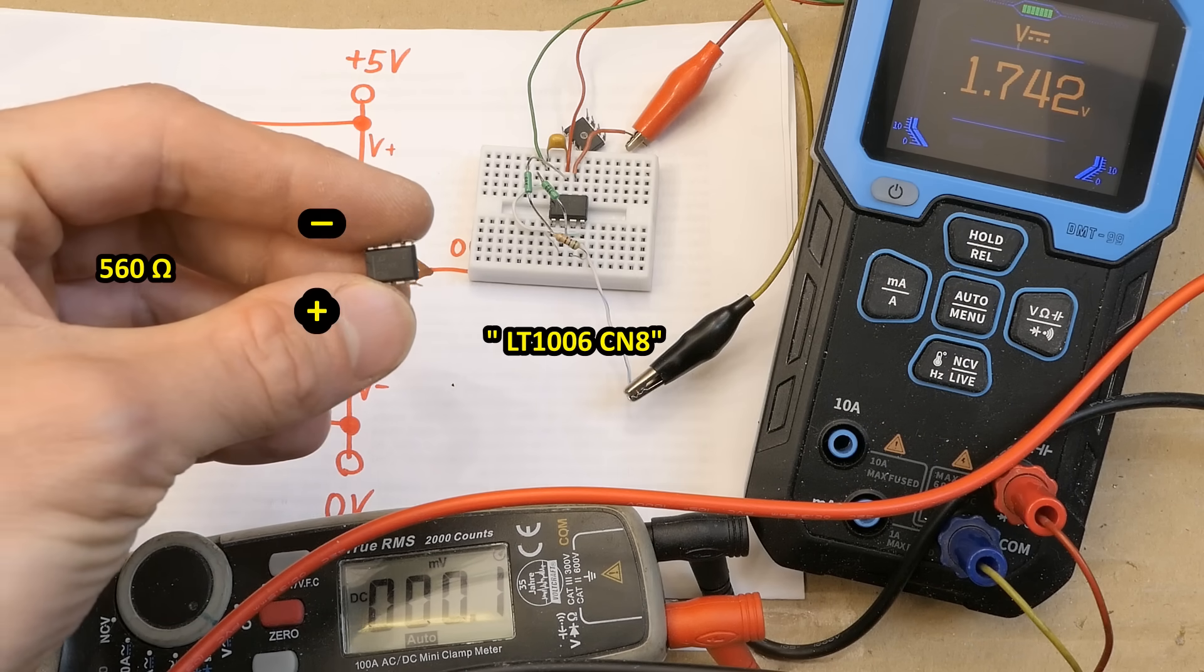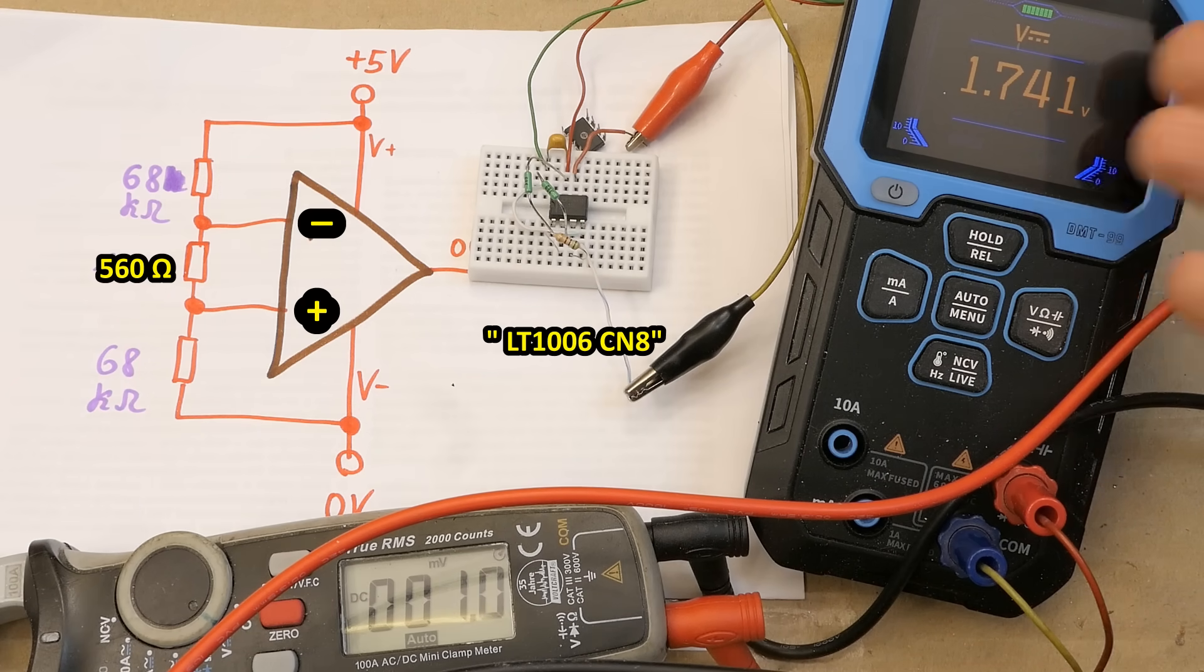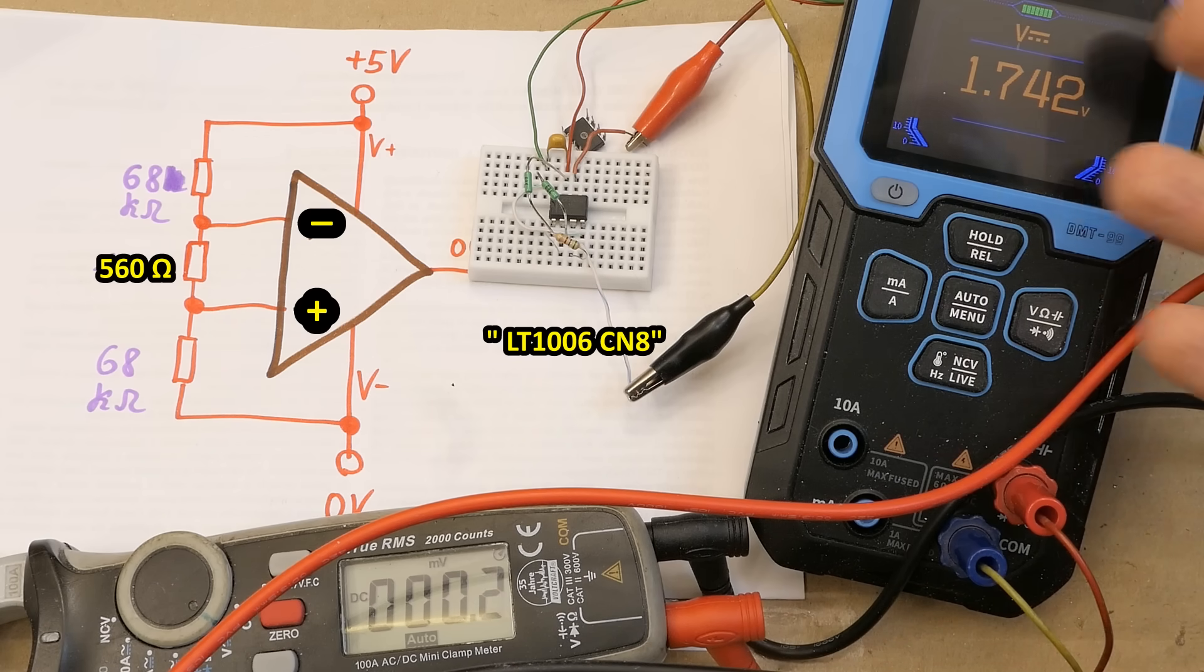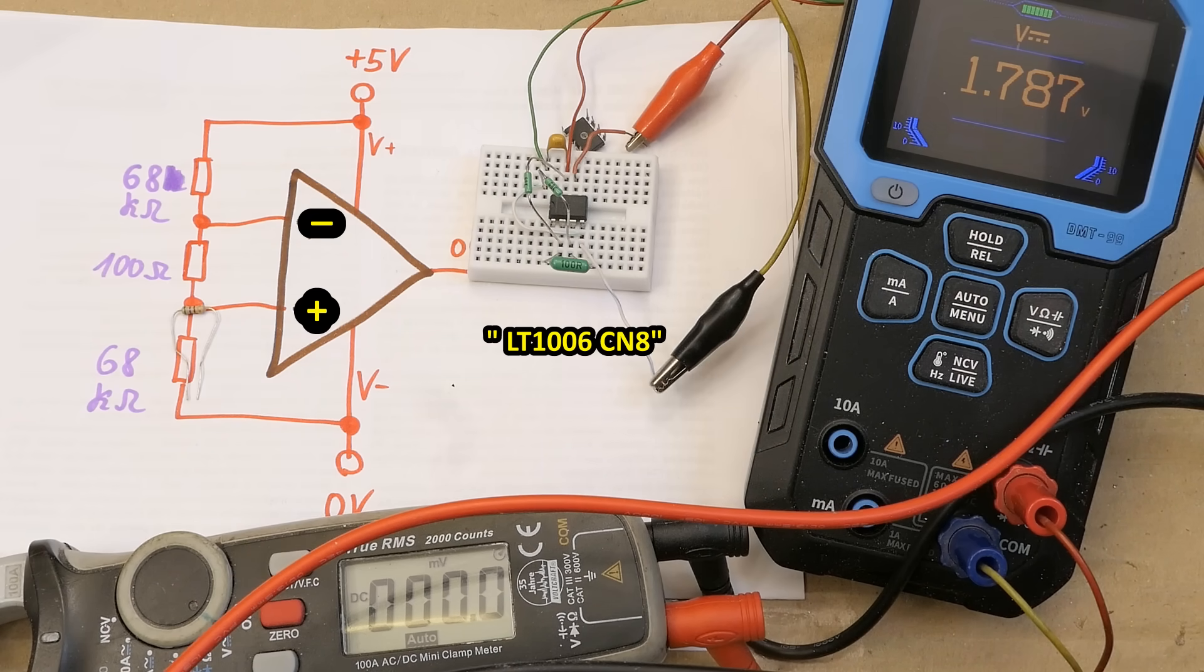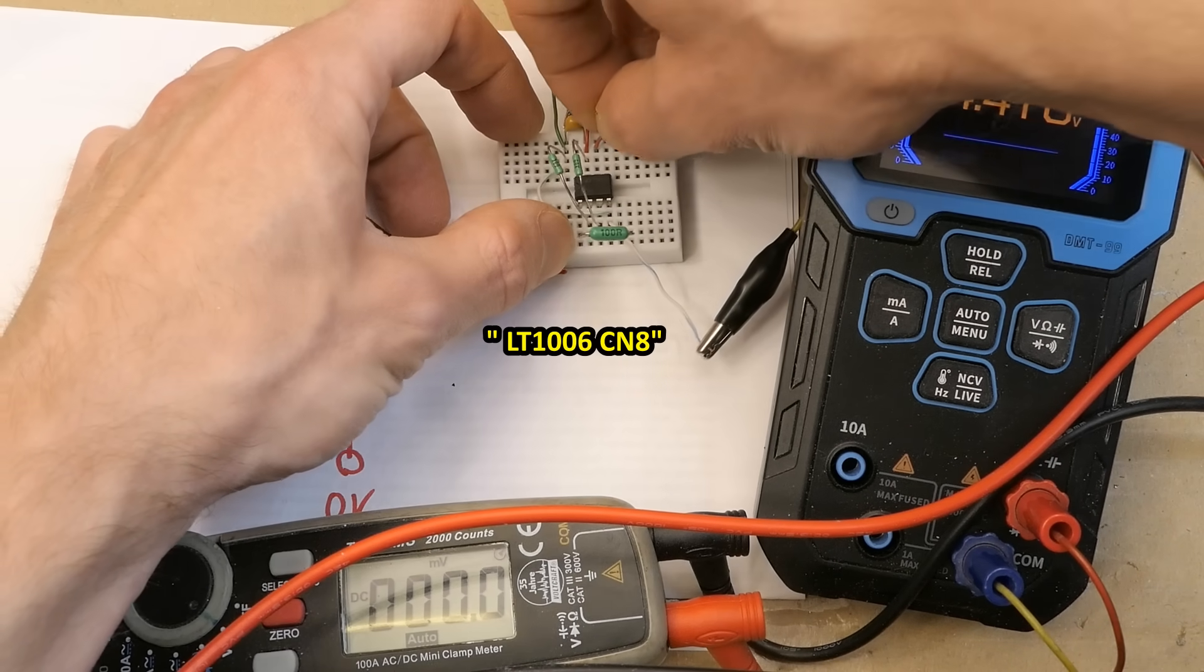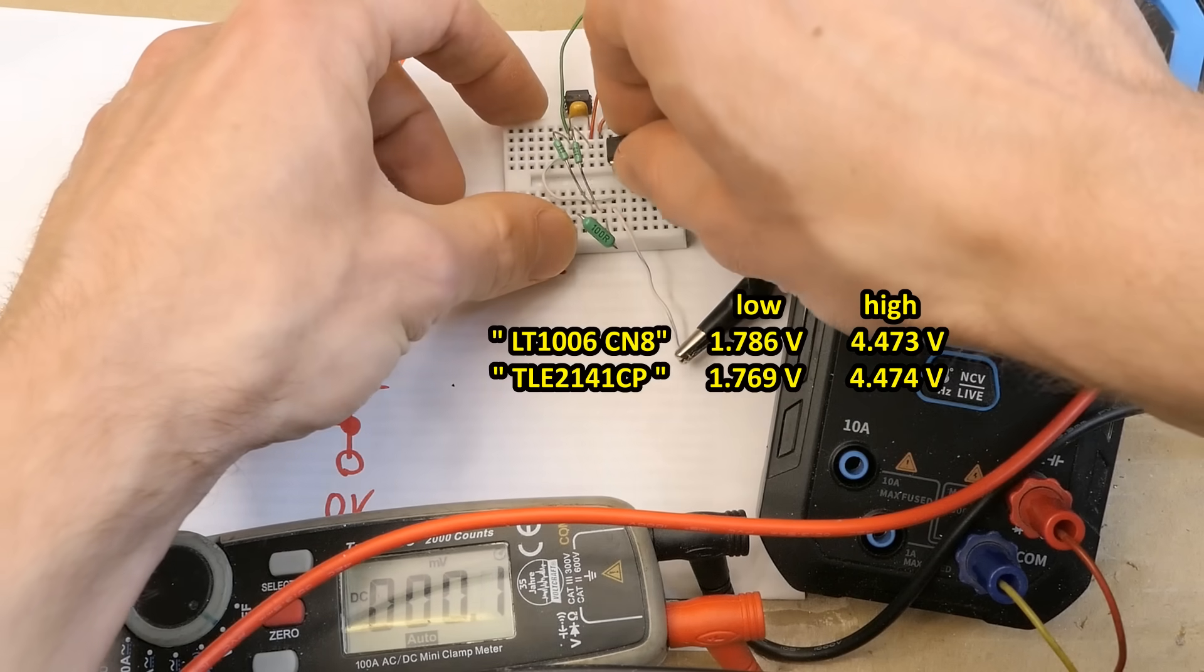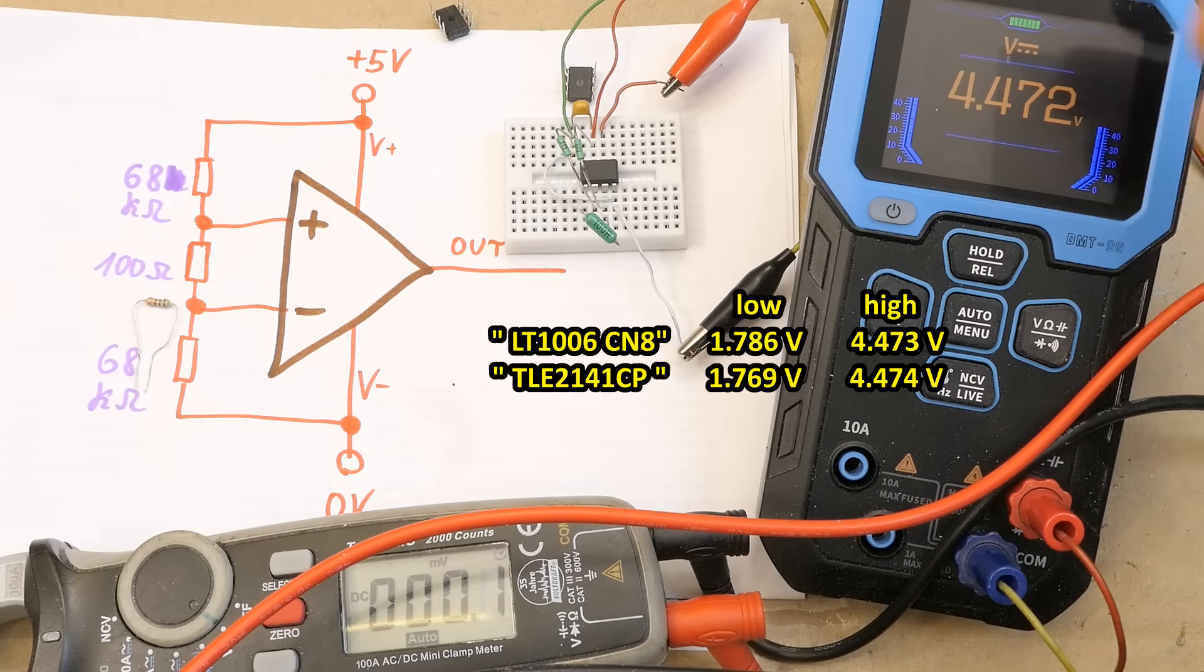And now it's getting interesting. I've put the other type into it. LT1006 and the voltage is exactly the same or at least extremely close. A completely different type of an op-amp from a completely different maker. Now back to 3.6 millivolts between the inputs. Checking the supply voltage again. And now I flipped the inputs back to this and the high state voltage is this and the other type of the op-amp. It's the same voltage.